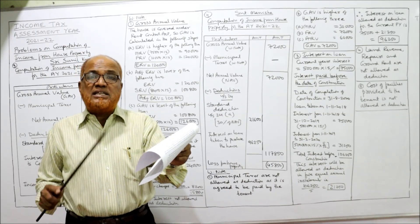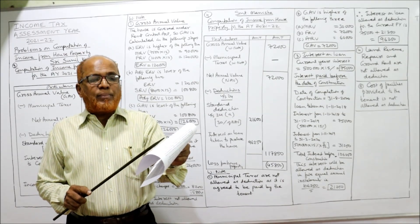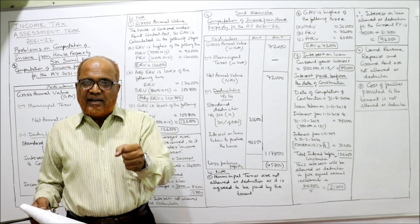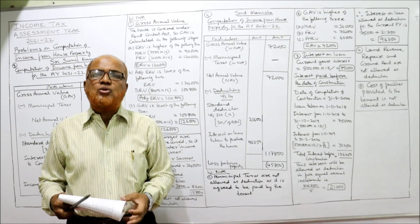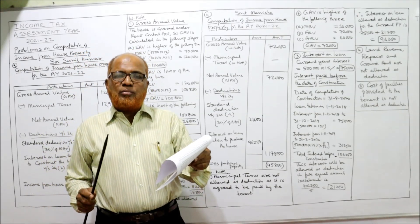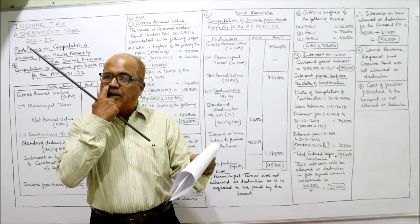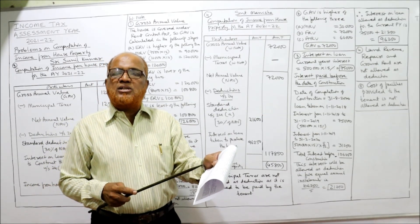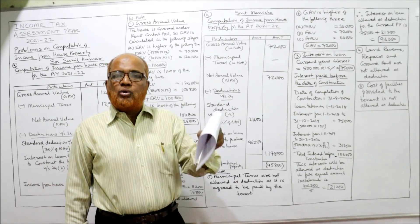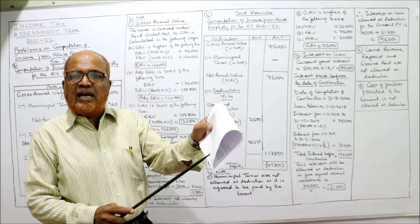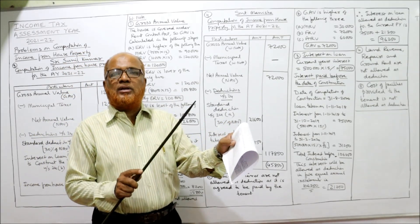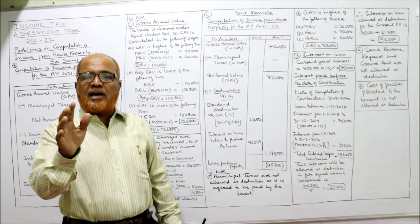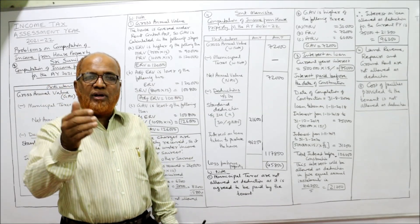The loan was taken on 1st November 2018, whereas construction was completed on 31st August 2020. We have to find the total interest from the date the loan was taken up to the date of construction. According to the provisions of the Income Tax Act, interest is to be calculated up to 31st March before the date of construction. Construction was completed on 31st August 2020, so we calculate interest up to 31st March 2020 — not up to 31st August 2020.